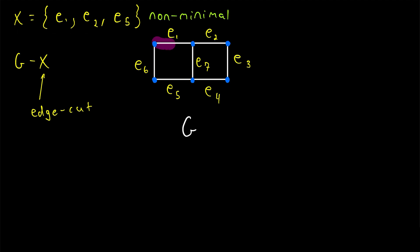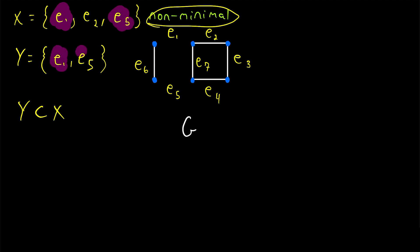Instead of deleting E1, E2, and E5, we could disconnect the graph by just deleting E1 and E5. So if we call this edge cut, let's say, Y, Y is the set containing E1 and E5. This is another edge cut that is a proper subset of X. That's why X is non-minimal. Again, it contains edges, E1 and E5, that make up a smaller edge cut. Y has only two edges, X has three.